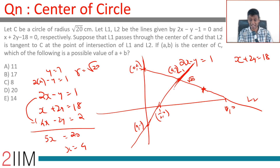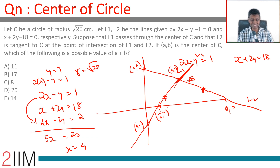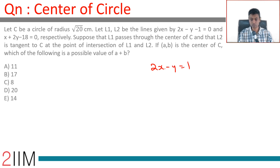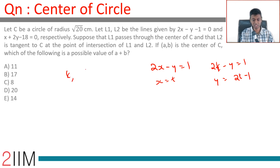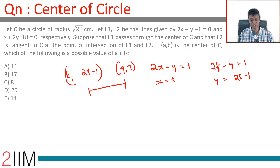Since L1 passes through the center, and L1 is the line 2x minus y equals 1, the center lies somewhere on L1. We parametrize: let x = t, then y = 2t minus 1, giving a general point (t, 2t-1) on L1. The point of intersection is (4, 7), and the distance between them must equal √20.